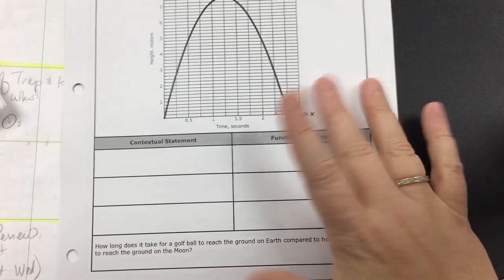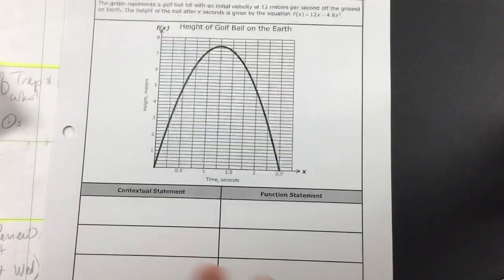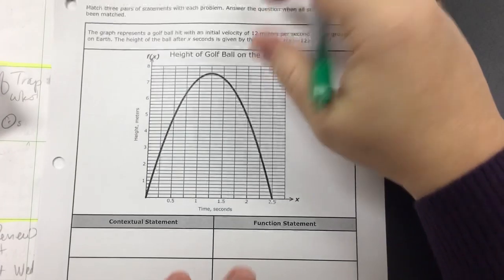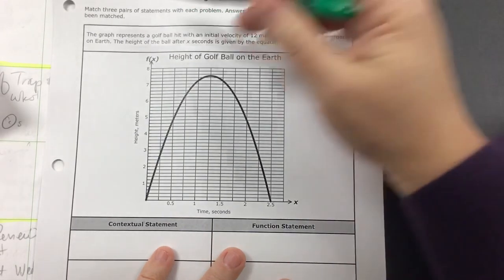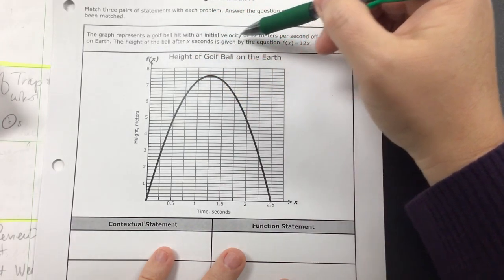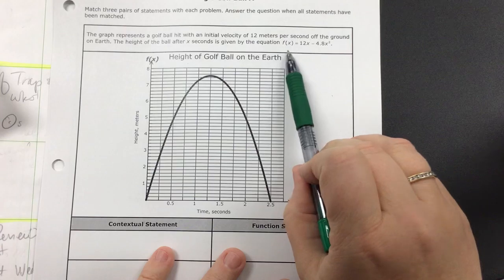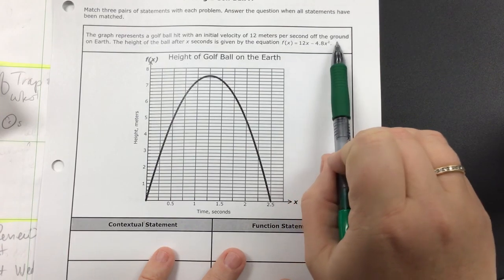Let's take a look at these and let's do one together. So on this first one, it says the graph represents a golf ball hit with an initial velocity of 12 meters per second off the ground on earth. The height of the golf ball after x seconds is given by the equation f(x) = 12x - 4.8x².